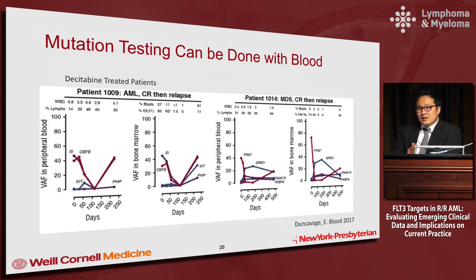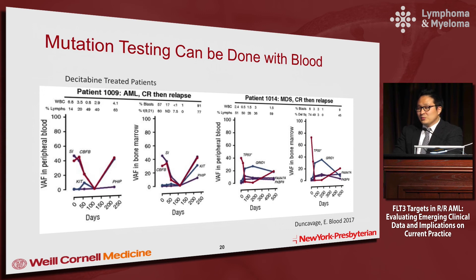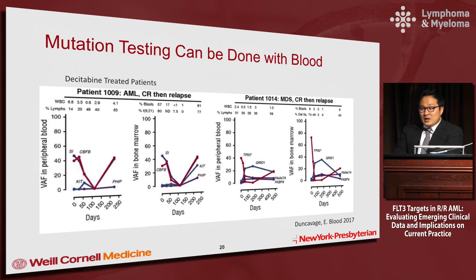A common question is whether this testing needs to be done on bone marrow versus blood. Data from the WashU group in AML and MDS patients treated with decitabine looked at serial specimens from blood and bone marrow in patients who relapsed, and they found concordance between bone marrow testing and blood. So it is reasonable to test for these mutations in AML patients using blood, provided that you have active disease.